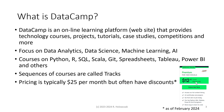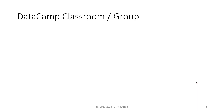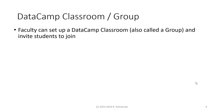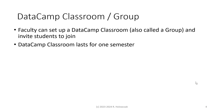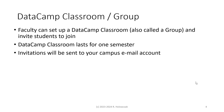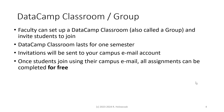For example, as I'm recording this, there's currently a 50% discount. Now, your professor can set up a DataCamp classroom — it's also called a group — and they can invite students to join. The DataCamp classroom lasts for one semester, and invitations will be sent to a student's campus email account.